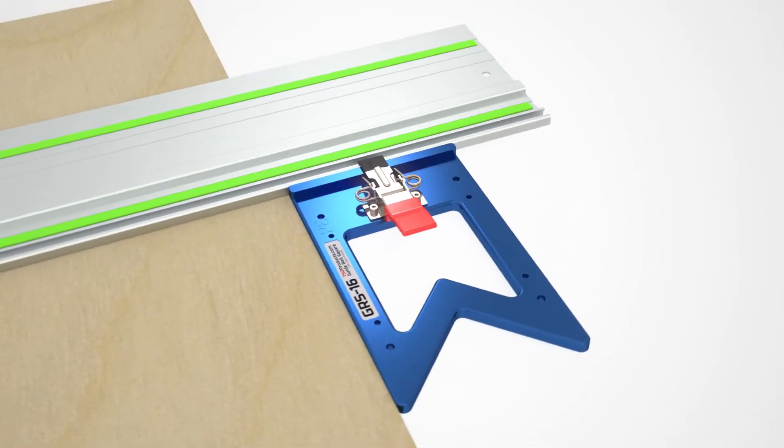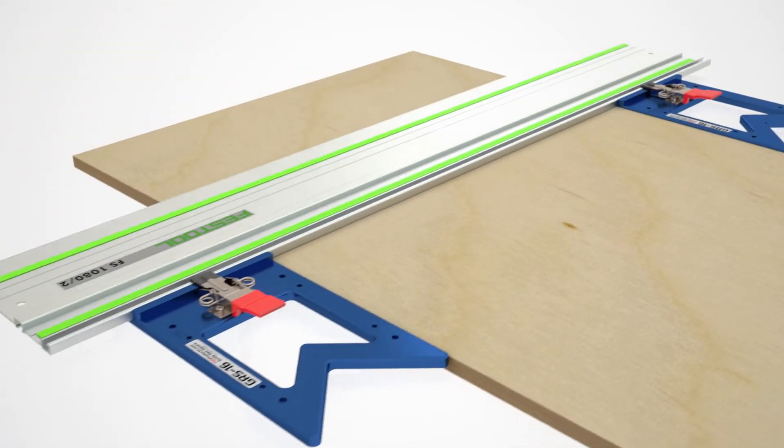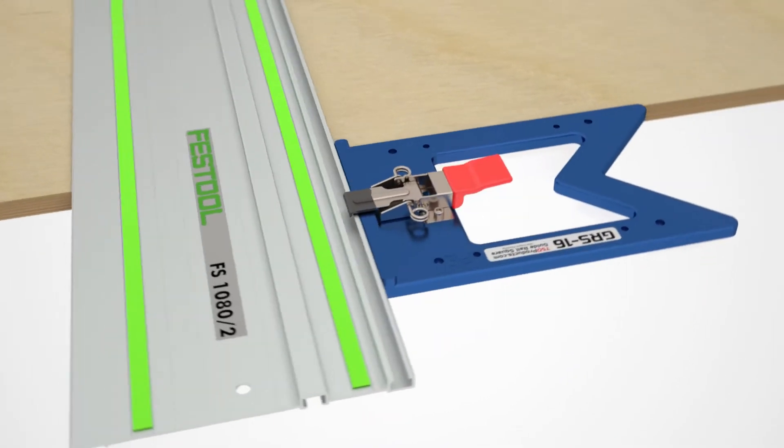Similar to its sibling, the GRS16, this PE version adds a second parallel edge to permit referencing off the front and back of your workpiece.